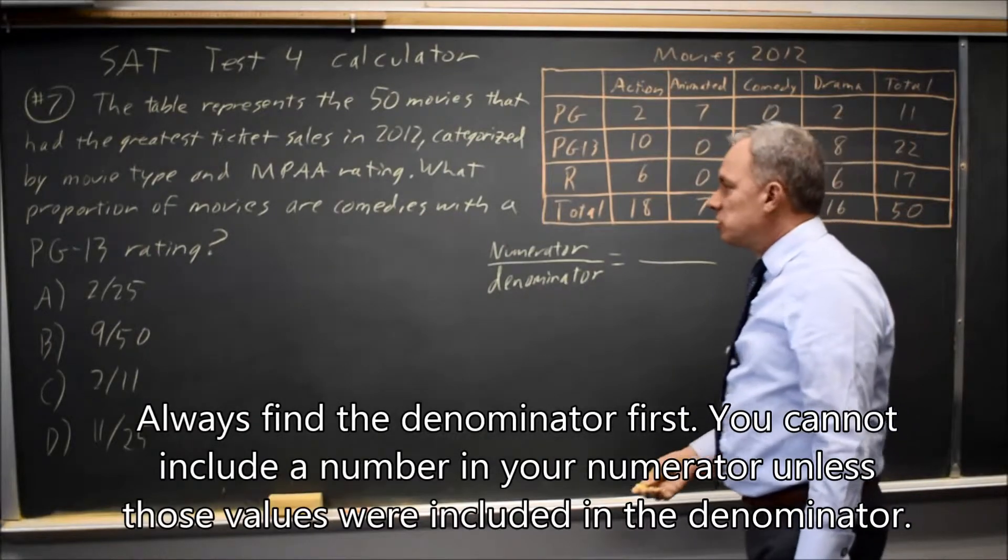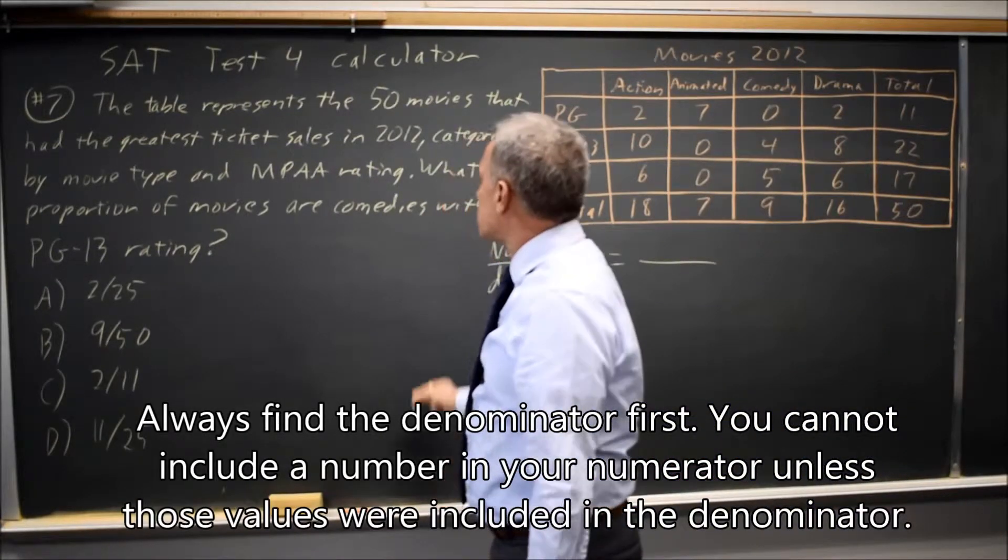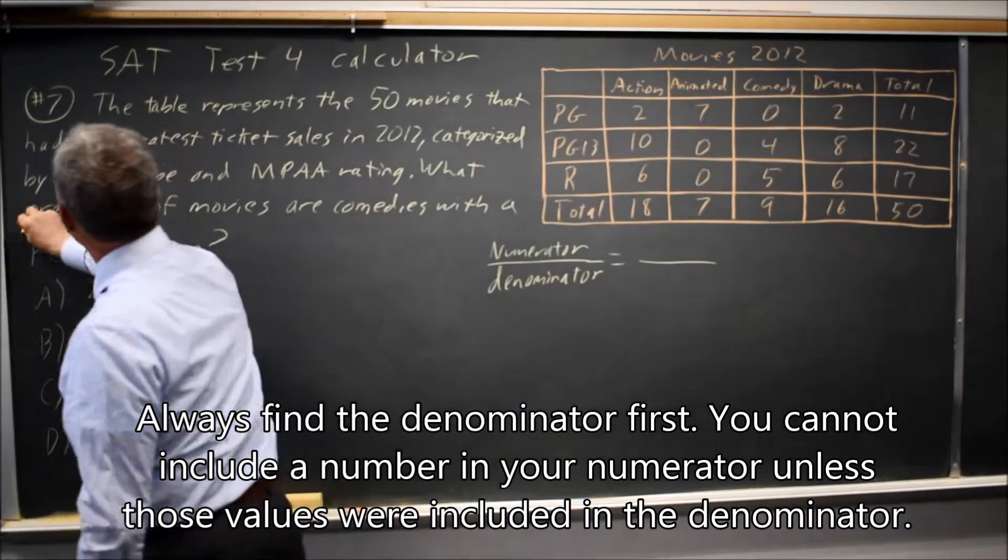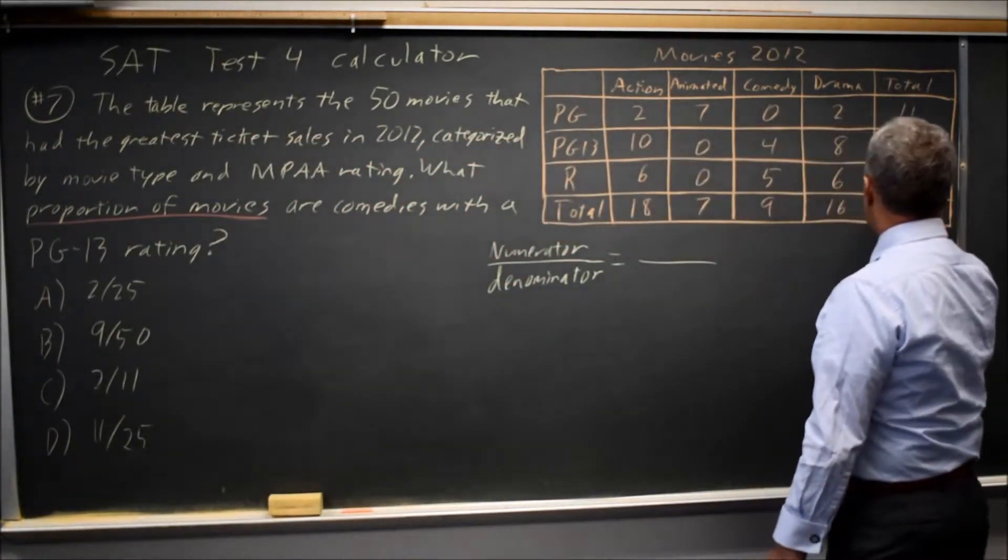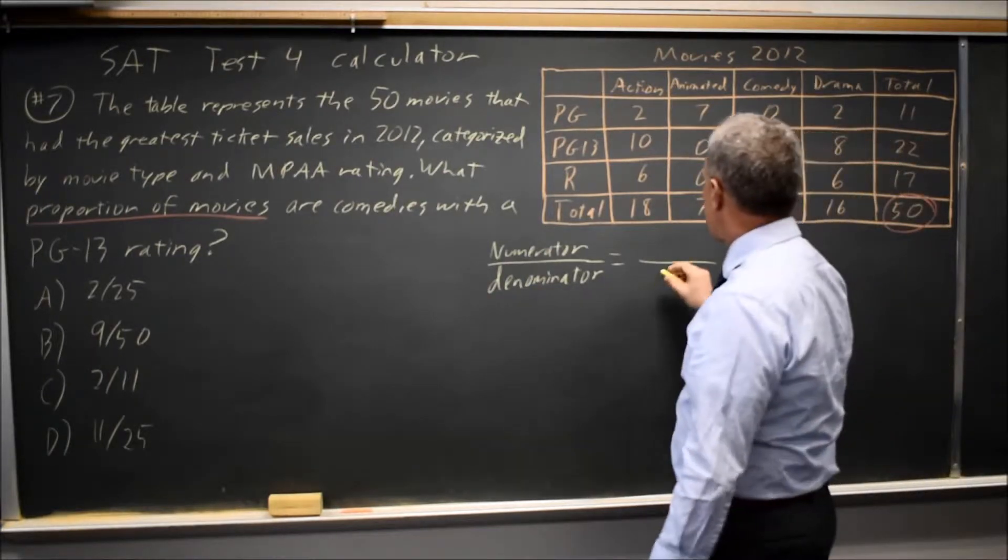My denominator is all movies that they're asking about. The question is, what proportion of movies? There's no restriction on that. So the movies they're asking about is all 50 movies. My denominator is 50.